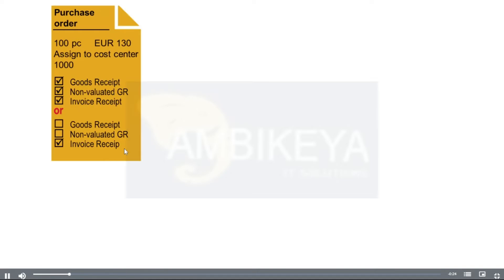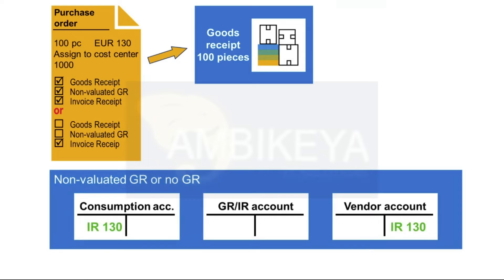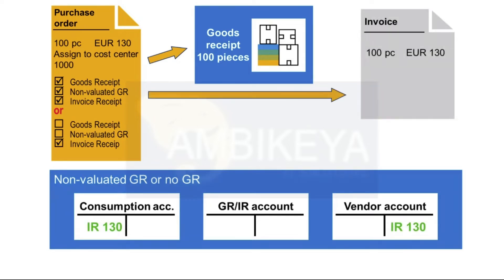The figure shows a PO item for consumable material, for which no goods receipt, or only a non-valuated goods receipt, and an invoice receipt are expected. At the time of the goods receipt, there are no postings to the consumption account. Therefore, posting to the GR-IR clearing account is not applicable.